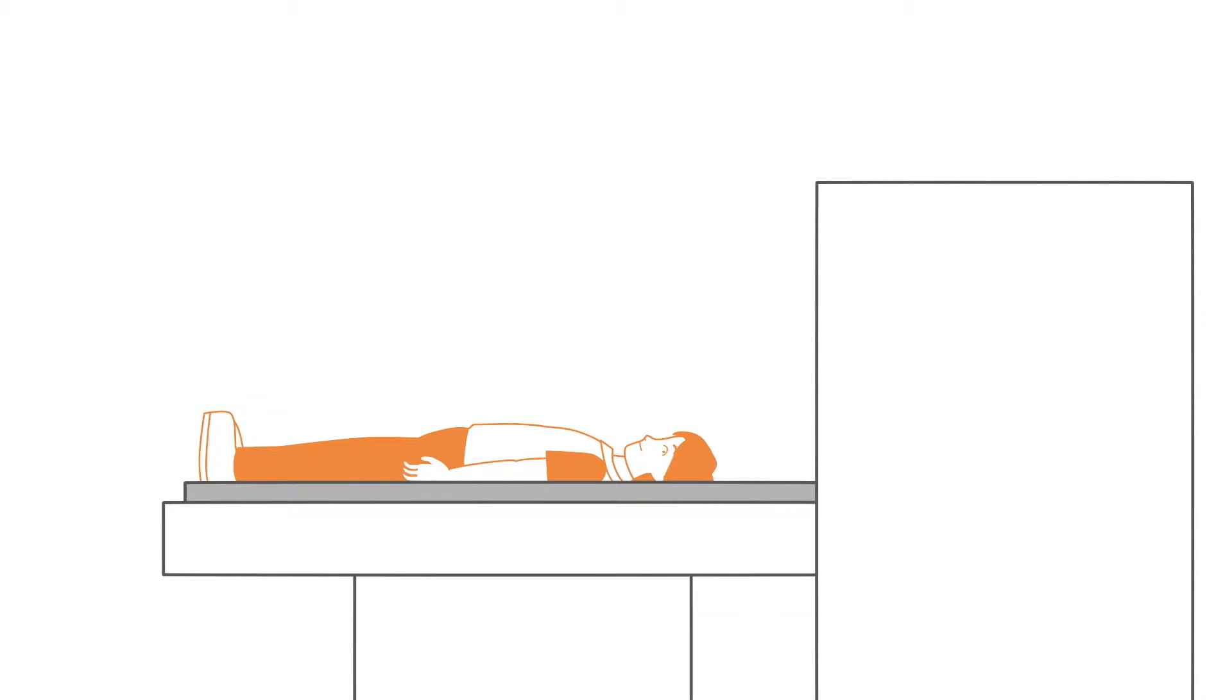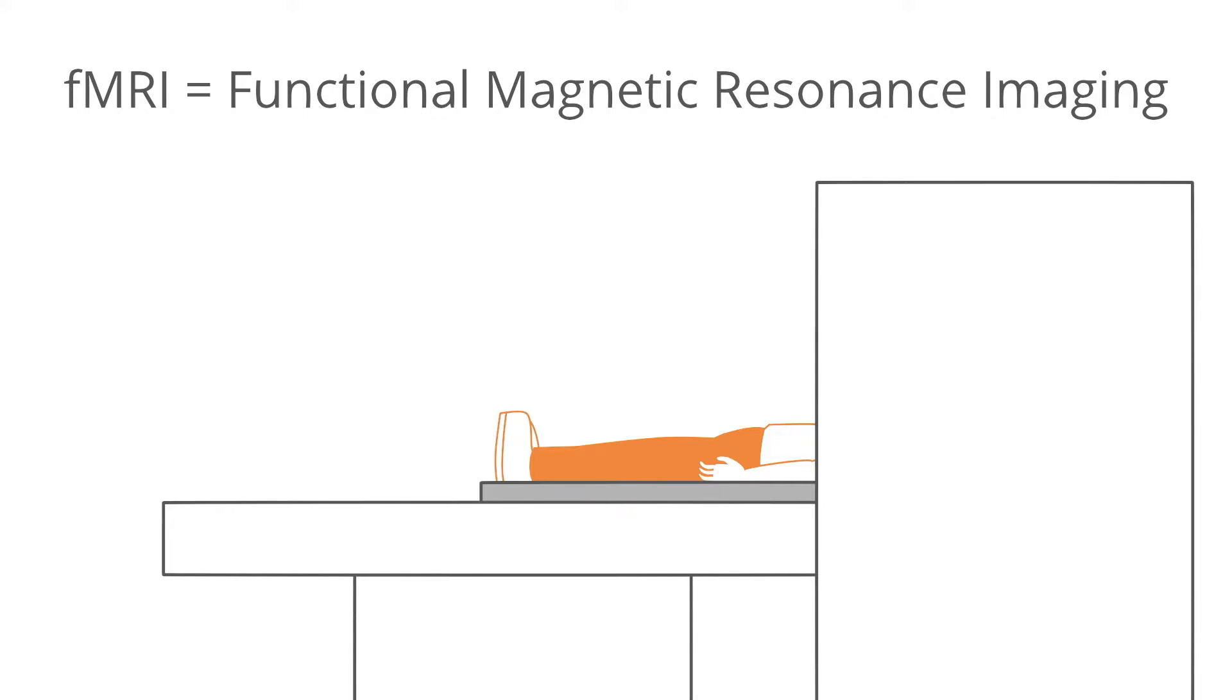This MRI can depict what the brain looks like and what is happening in different parts of the brain. This is called fMRI – Functional Magnetic Resonance Imaging.